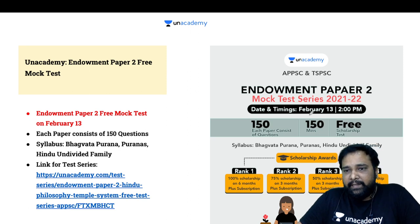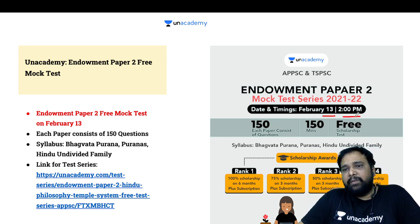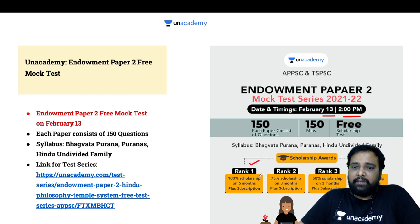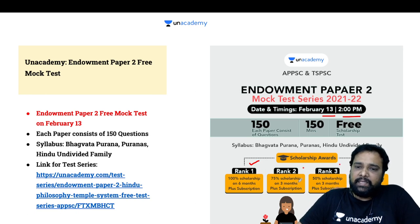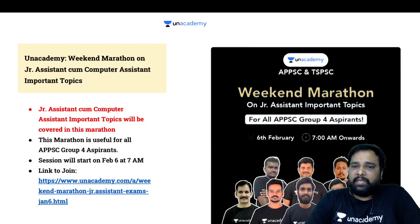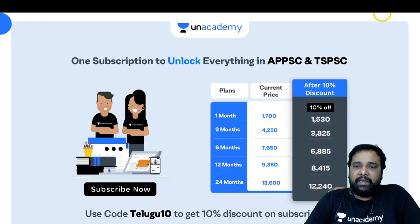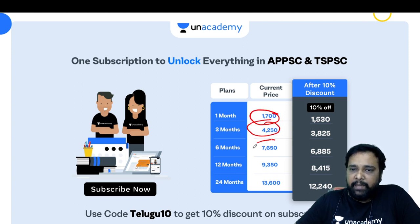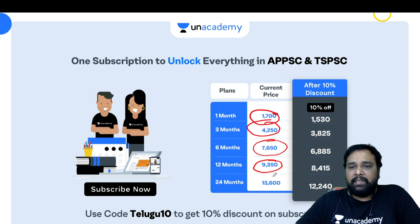From February 13, over 2 days, you can crack 2 papers and get ranked. 1st rank, 2nd rank, 4th rank — 75%, 50%, and 25% discounts are available for plus subscribers. You can join for 1 month, 3 months, 6 months, 1 year, or 2 years.